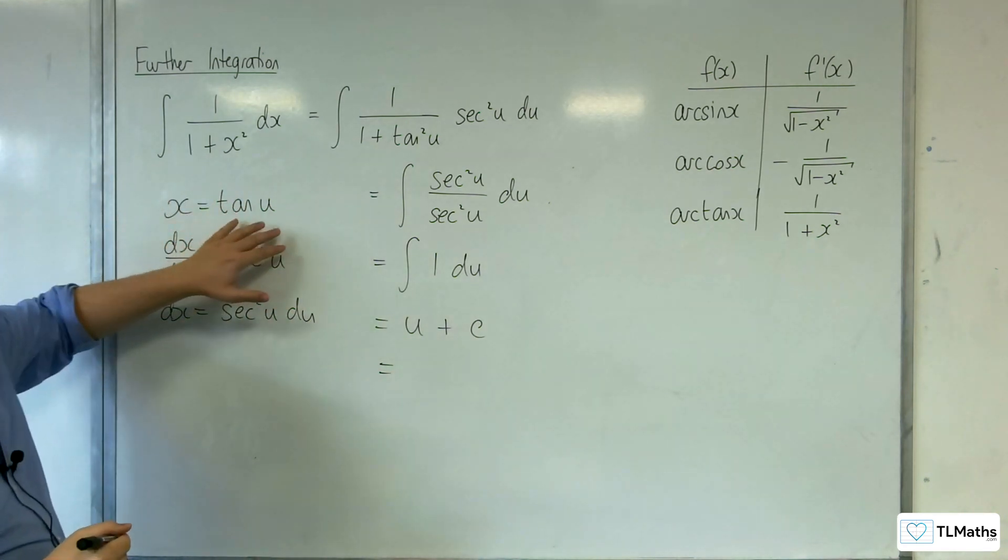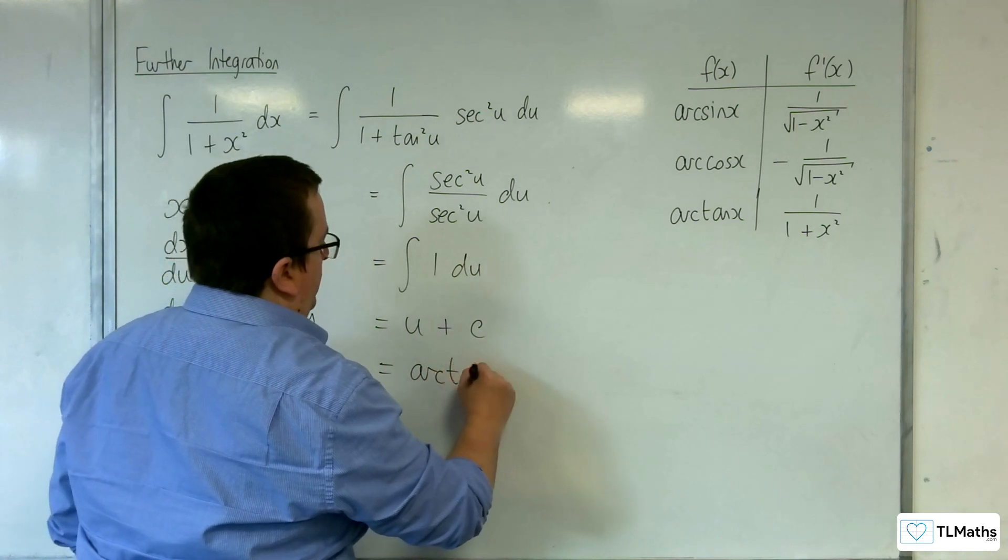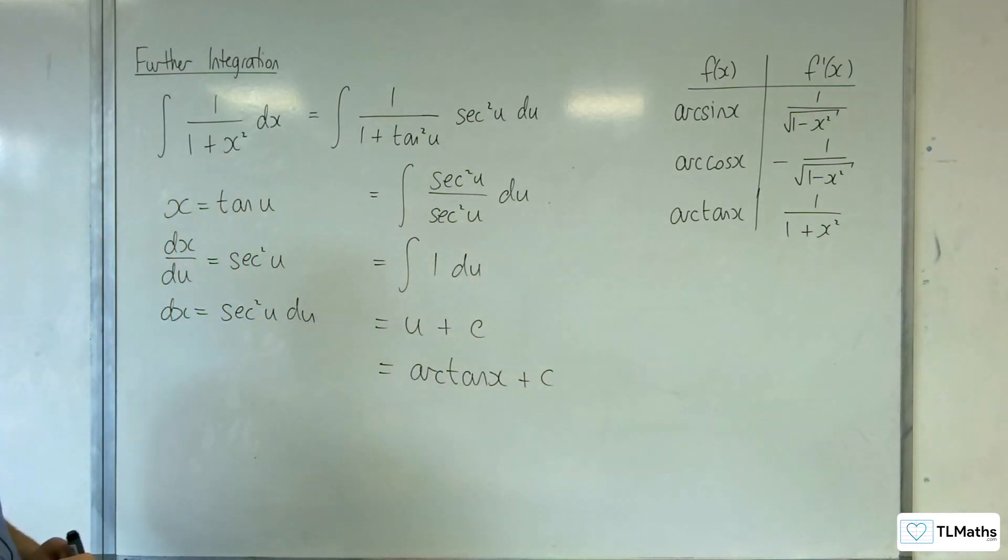And u, if x is equal to tan of u, then u must be arc tan of x. So, that's how we can show this.